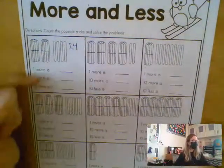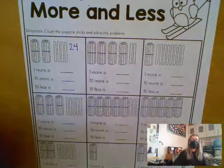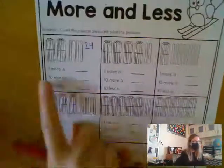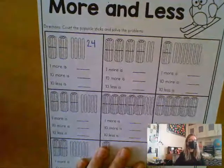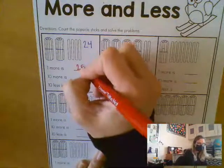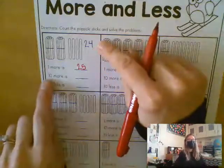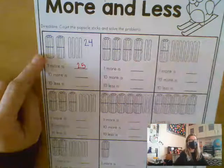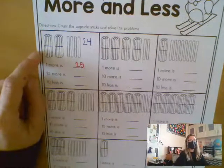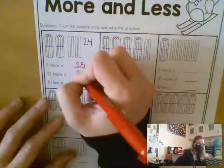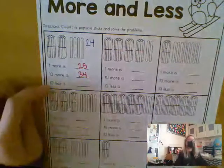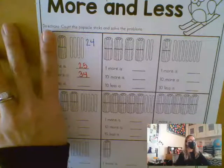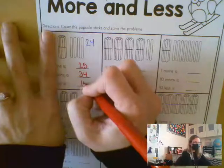Now, here they're asking us some questions. Emma, what if we added one more Popsicle stick to the 24? If we added one more, what would it be? 25. Good job. Now, if we had 24 and we added 10 more - now I'm not adding a one, I'm adding a 10 - how many would I have? 34. Good job. And the last one says, what would 10 less be? So if I took away one of these 10s, how many would I have? Blake? 14. Fantastic.